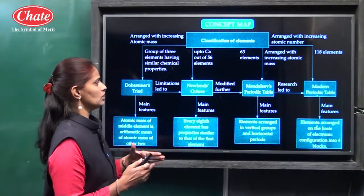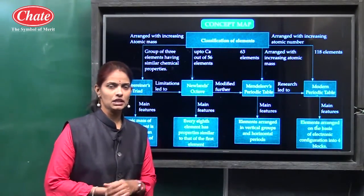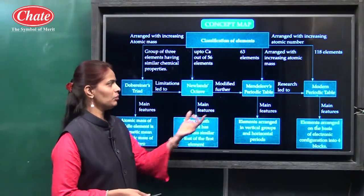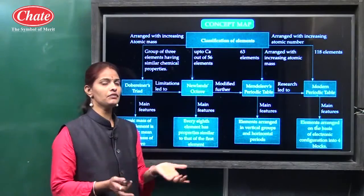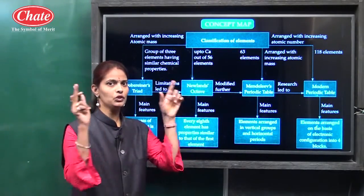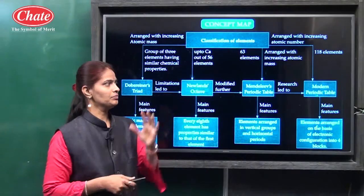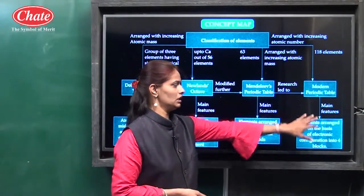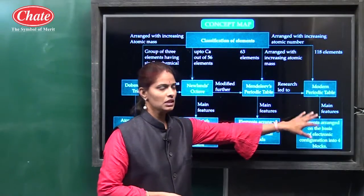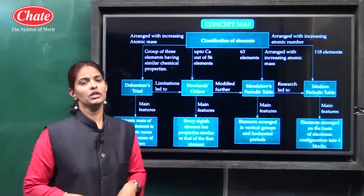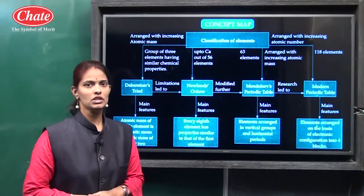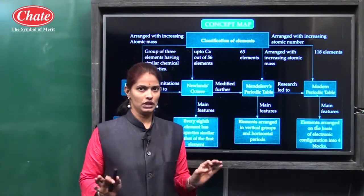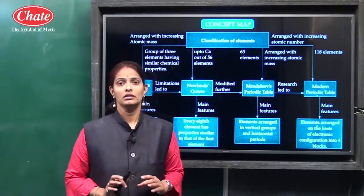When Henry Moseley showed that the properties of elements are the periodic function of their atomic number, not atomic mass, then Mendeleev further classified elements into a new periodic chart, that is the modern periodic table. He arranged elements in the modern periodic table into 18 vertical columns and 7 horizontal rows, with increasing order of their atomic number.